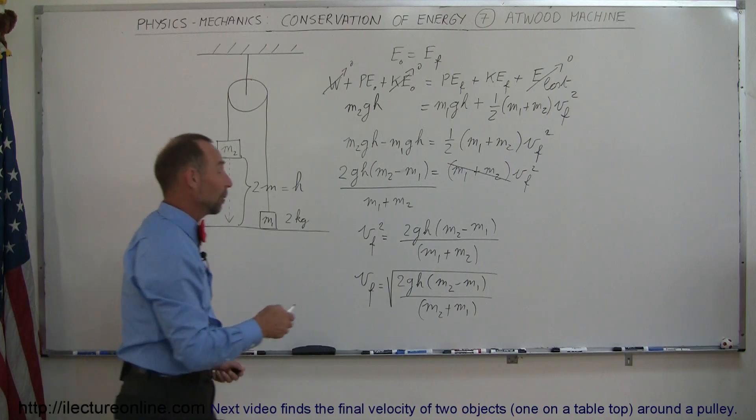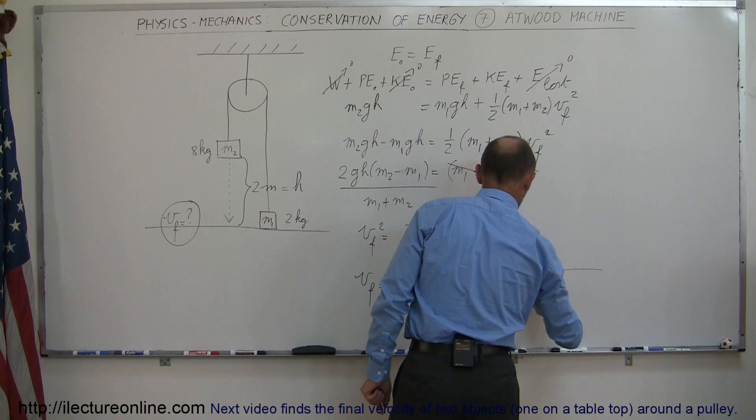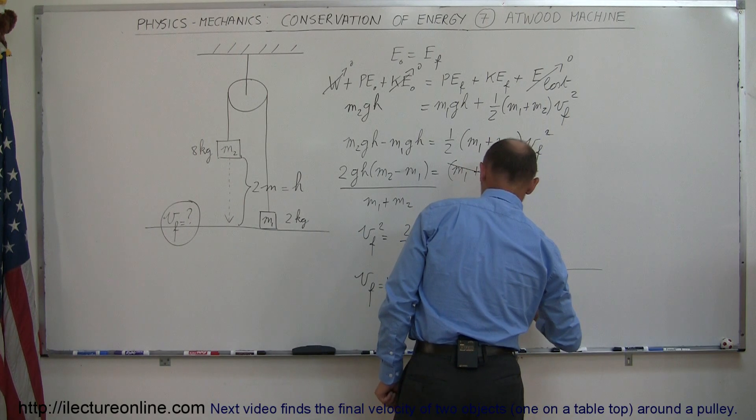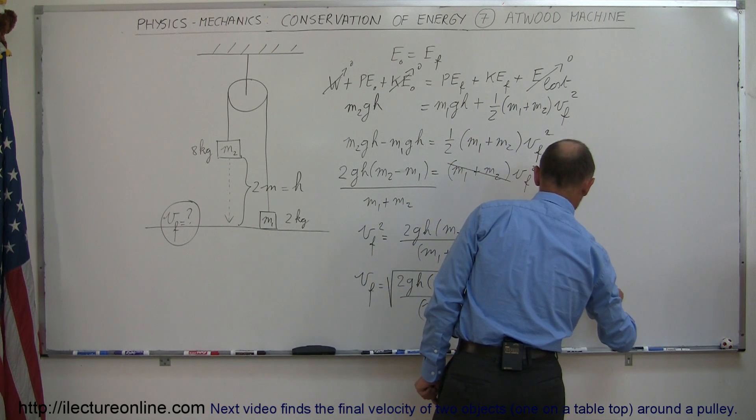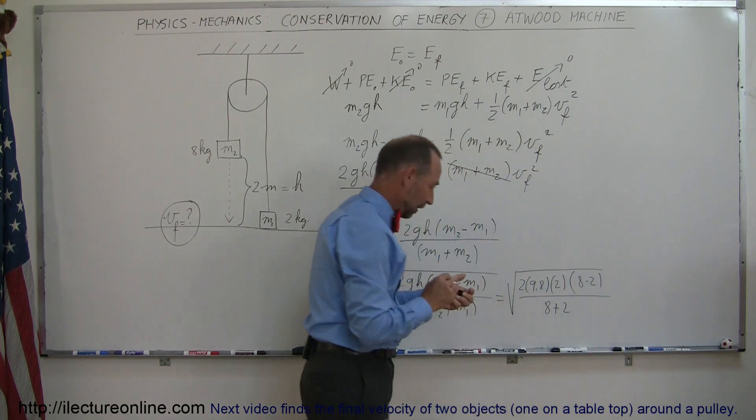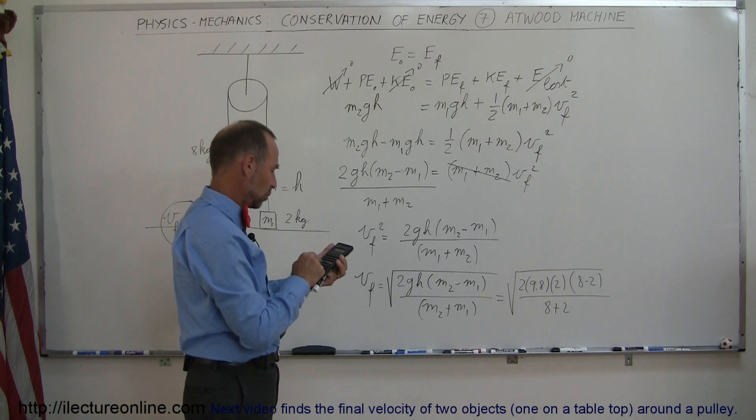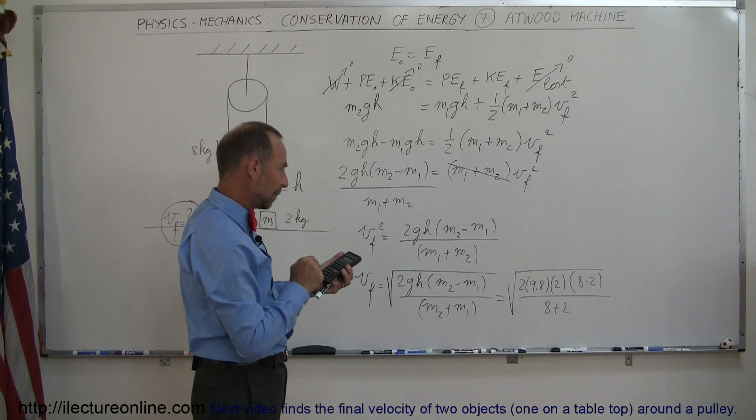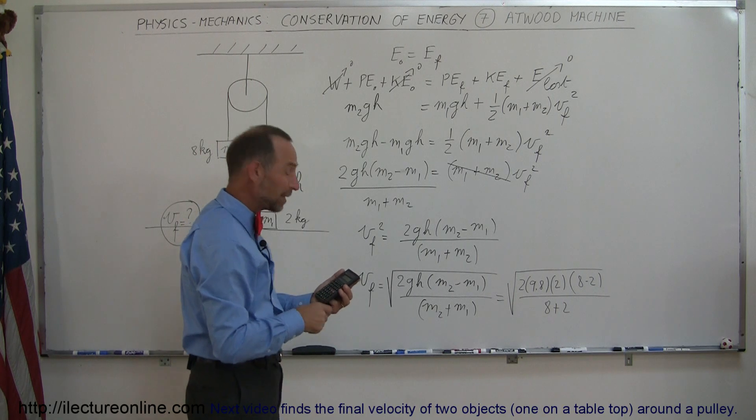All right, so now let's bring the numbers and see what we get. So this is equal to the square root of 2 times 9.8 times H was 2 meters, and we're going to multiply that times M2 minus M1, which would be 8 minus 2 divided by M2 plus M1, which is 8 plus 2. So let's see what we get when we calculate that. So we have 2 times 9.8 times 2 times 6 and divide that by 10 and then take the square root and we get 4.85.